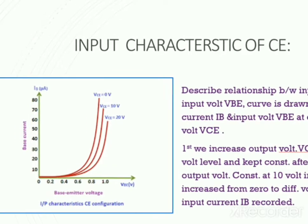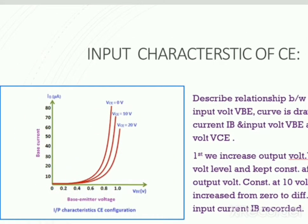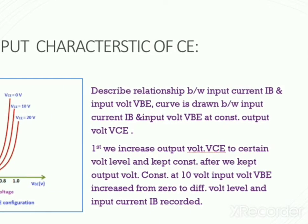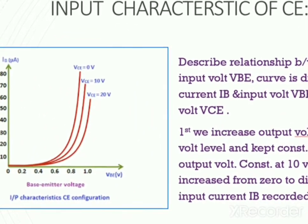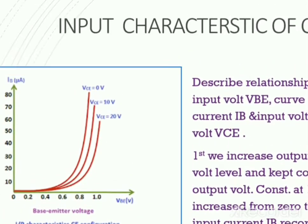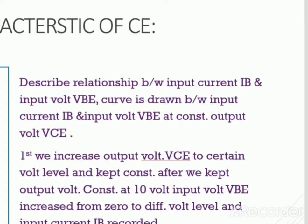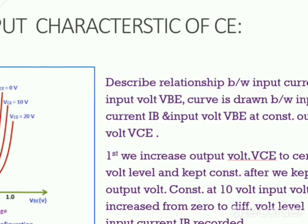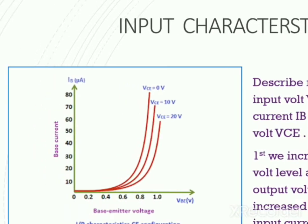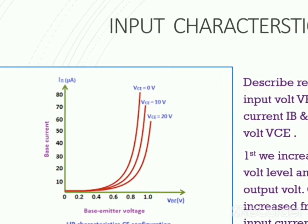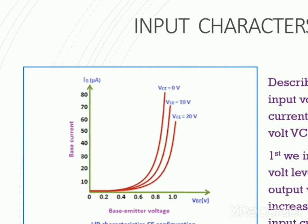Now coming to the input characteristics. It describes the relationship between input current or base current IB and input voltage VBE. A curve is drawn between IB and VBE at constant output voltage VCE. The output voltage is first increased from zero to a certain voltage level, for example 10 volts, and kept constant. Then input voltage VBE is increased from zero to different voltage levels and input current IB is recorded.